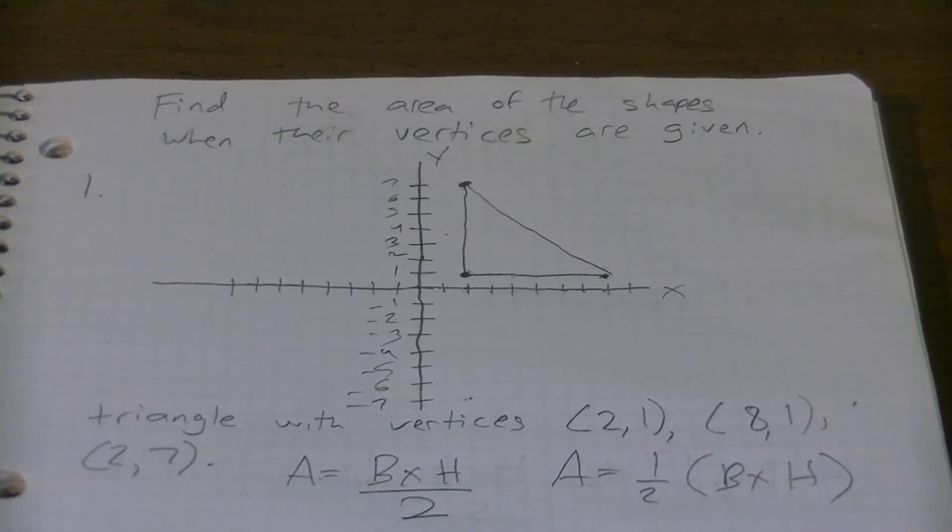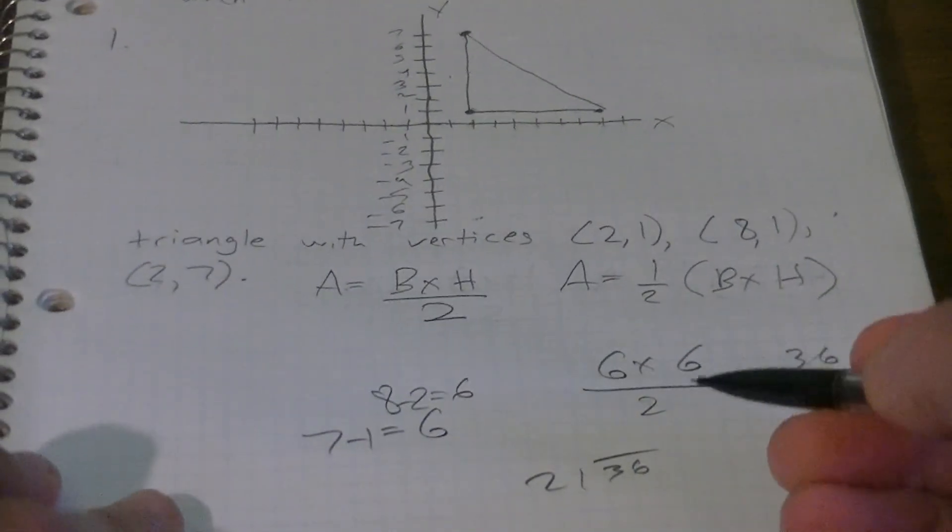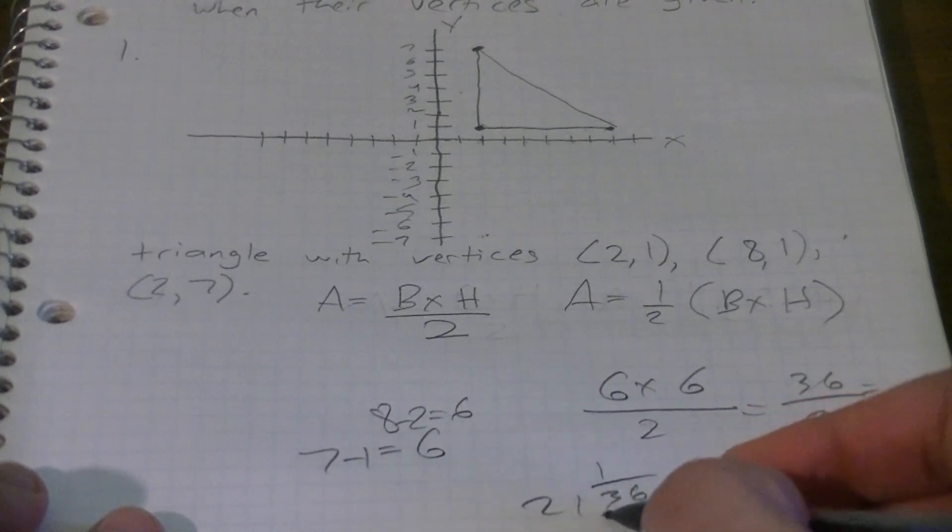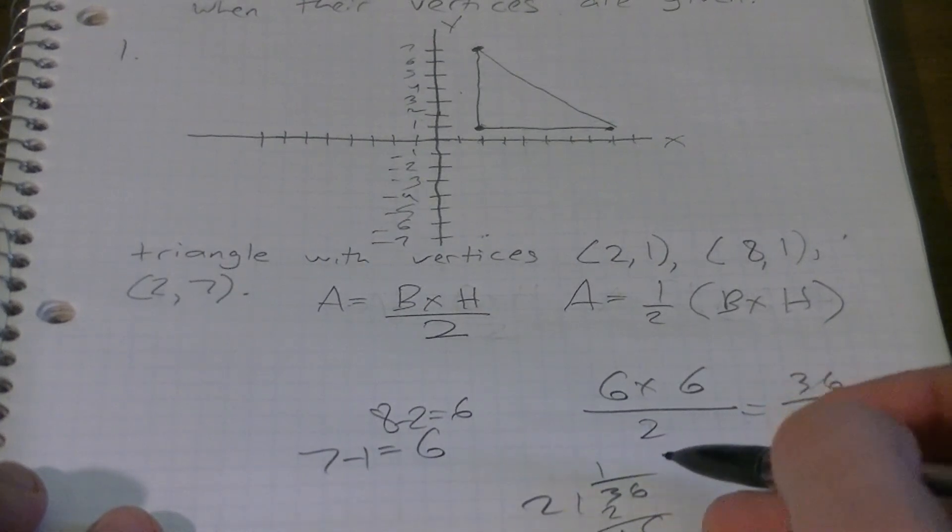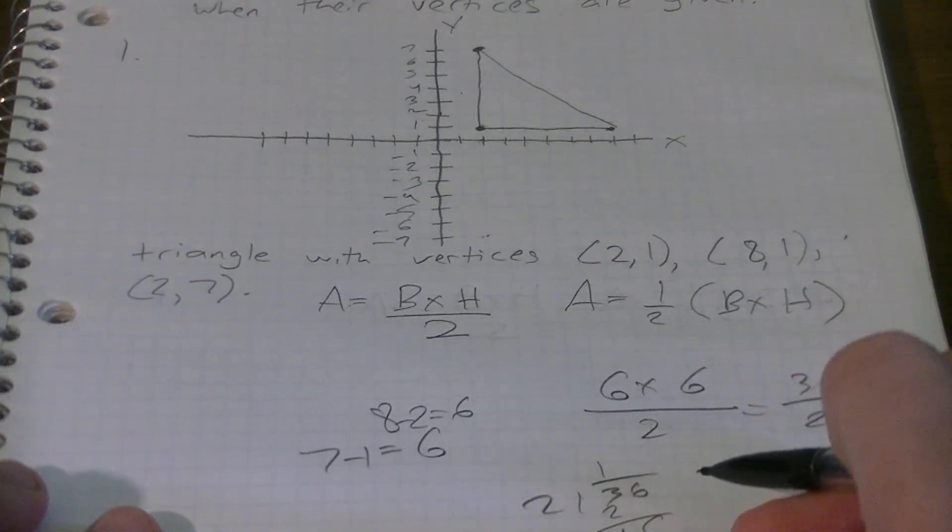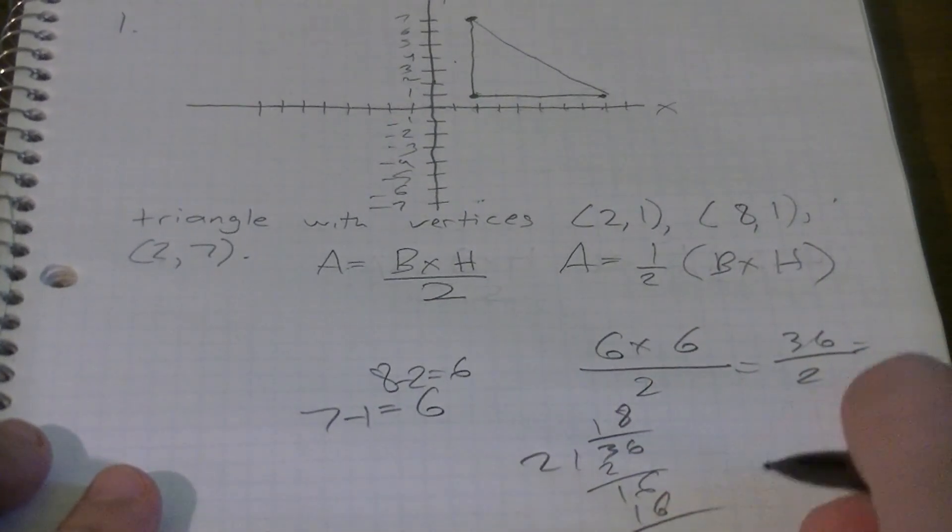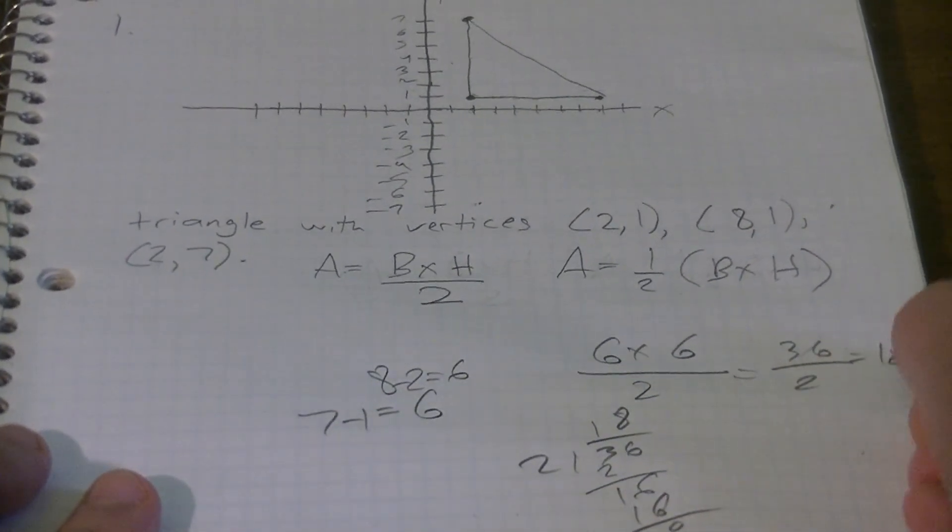How many times does two go into 36? Let's do a little division here. Move it up so you guys can see. Two goes into three one time, two, put the one down: 16. How many is that guys? Come on, you know this: eight times. Eight times two is sixteen, zero. So our answer, our area, is 18.